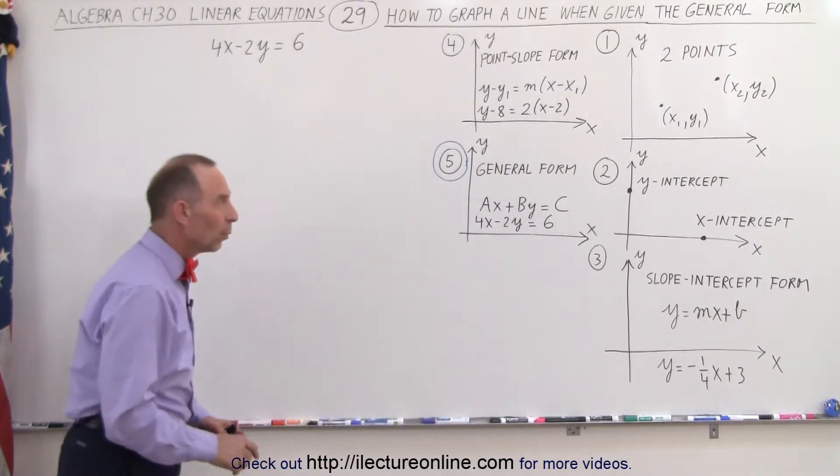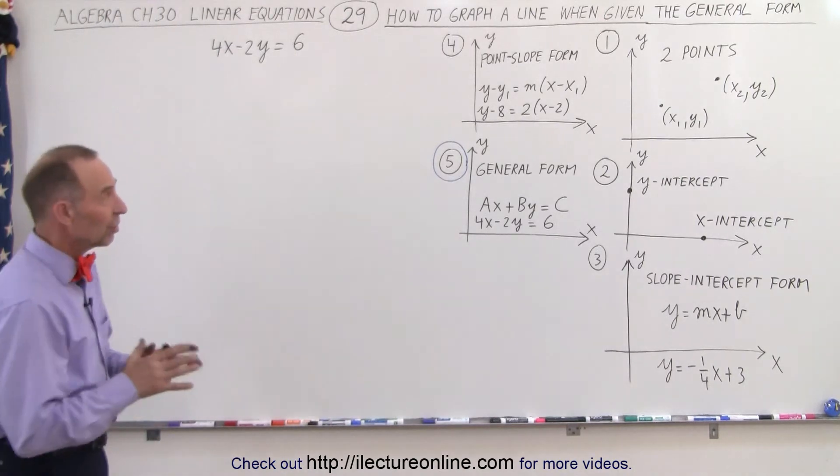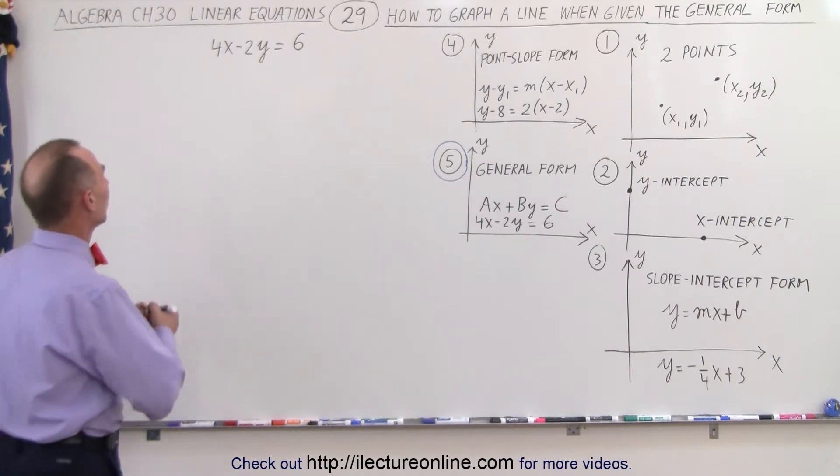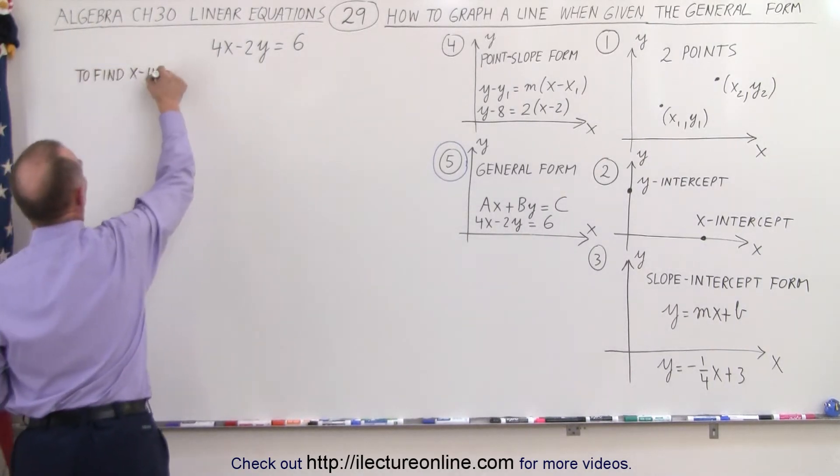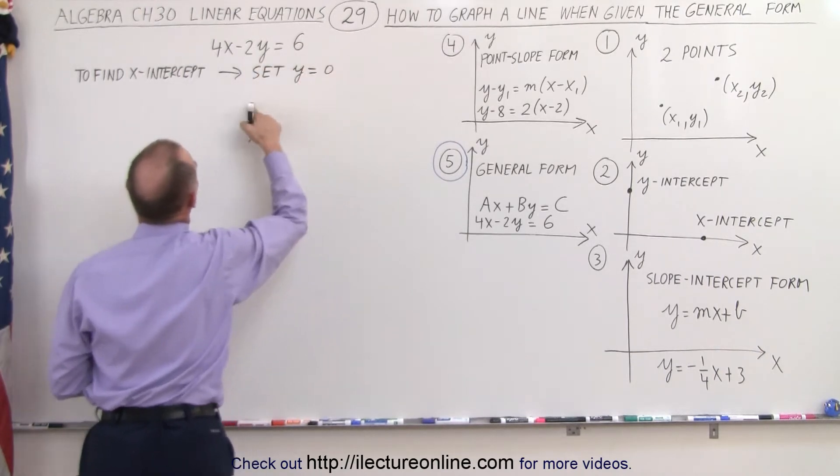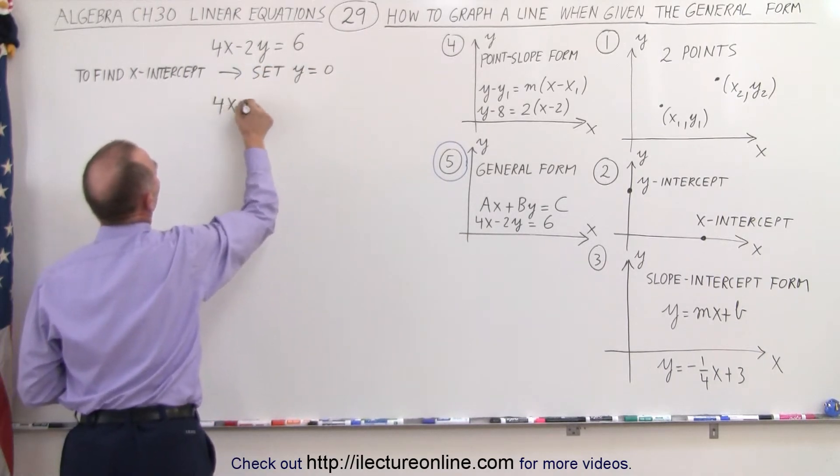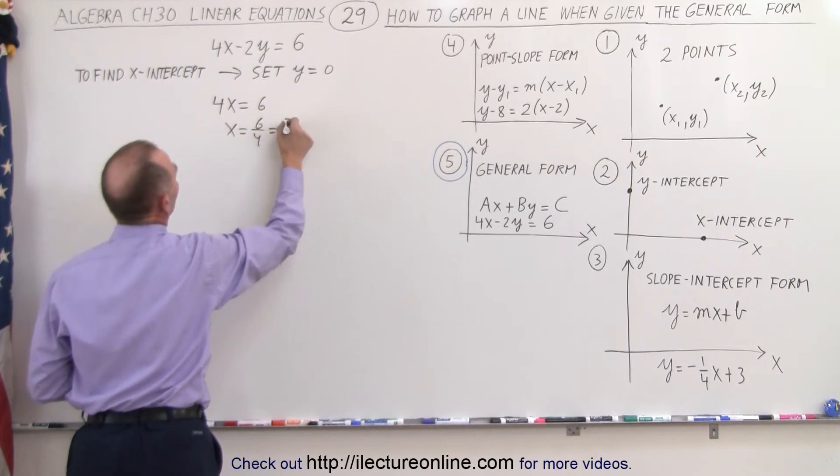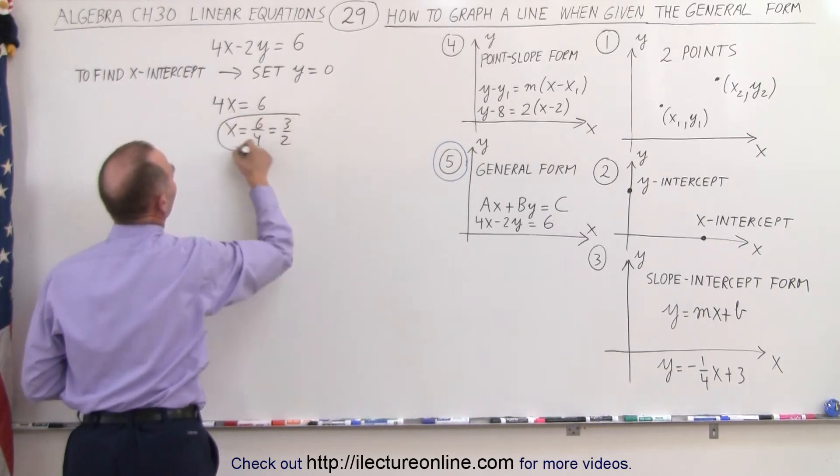How do we graph that? Well, if we're given the equation in the general form, it's relatively easy to find the X and Y intercept. To find the X intercept, we set Y equal to 0. And if we do that, we get 4X is equal to 6, or X is equal to 6 over 4, which is equal to 3 over 2. So there's the X intercept.